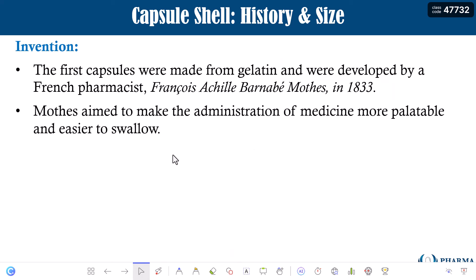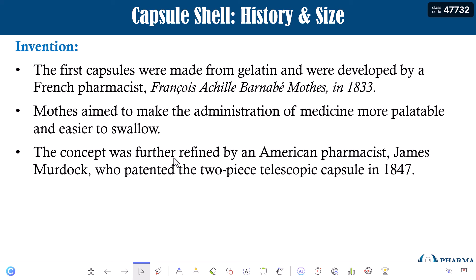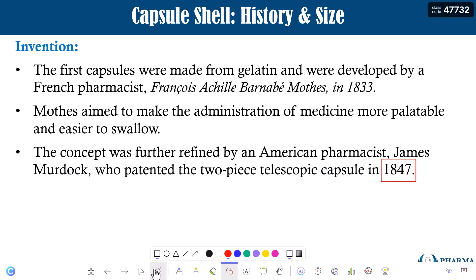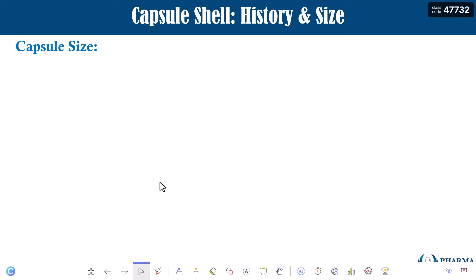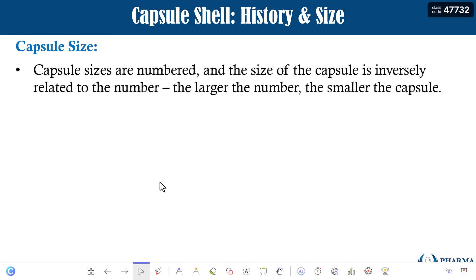The purpose of making the capsule shell was to make the administration of medicines more palatable and easier to swallow. The concept was further refined by an American pharmacist, James Murdoch, who patented the two-piece telescopic capsule in 1847. So this is a brief history about the invention of the capsule shell.